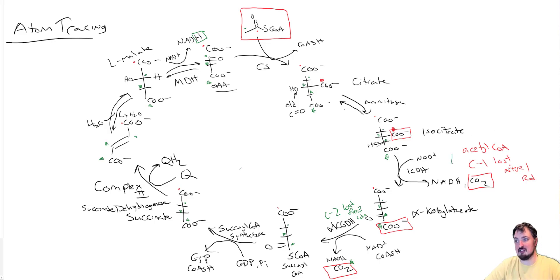So that's kind of a simple video to show you where different things are going to be lost. Acetyl-CoA's carbon one is going to be lost after a single round here at the isocitrate dehydrogenase step, and carbon two is going to be lost here after three rounds at the alpha ketoglutarate dehydrogenase step.